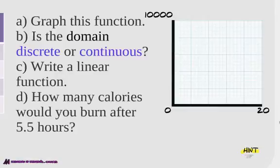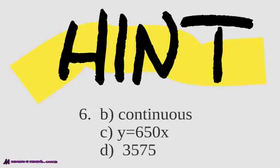With your linear function and graph, how many calories would you burn after five and a half hours? Look at the graph, look at the function, plug in five and a half for x, and see what you get. It is continuous, and it is 650 calories per every hour. So after five and a half hours, it's 650 times 5.5, and you get 3,575. Definitely go back and double-check your answer if you didn't get that.